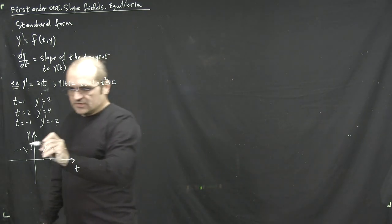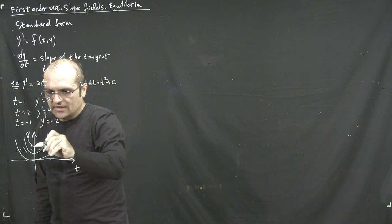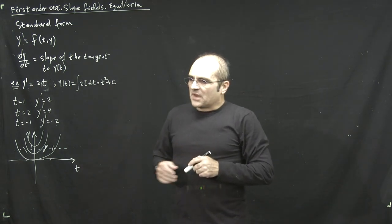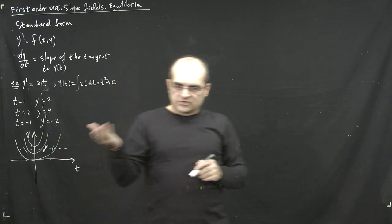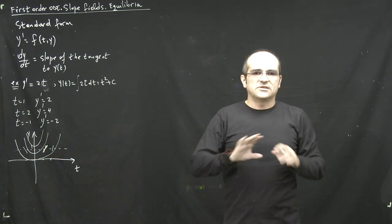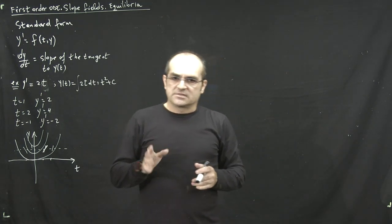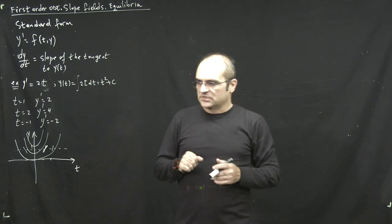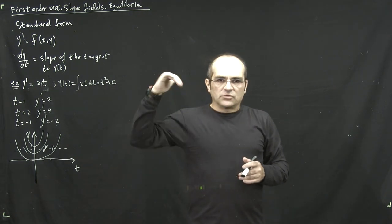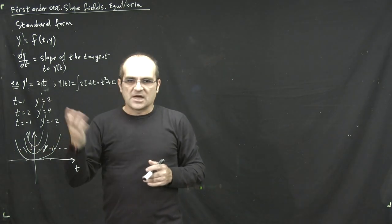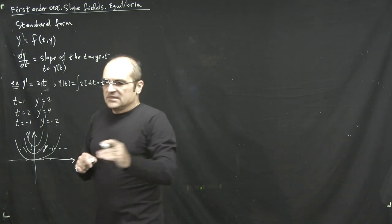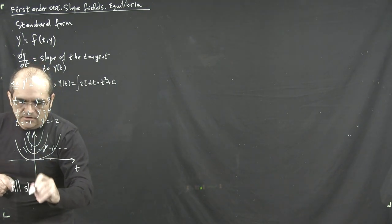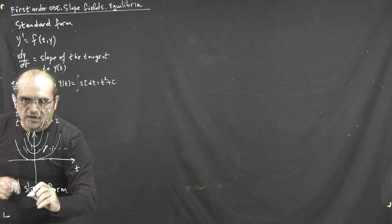We know that solutions of this ODE are parabolas stacked on top of each other — for every value of c, you get one of these parabolas. But the key point is that if you sketch enough of these slopes, you get an idea of how the solution looks like. By sketching enough slopes in the graph of y with respect to t, you get the idea of how the solution looks depending on which point you start with.